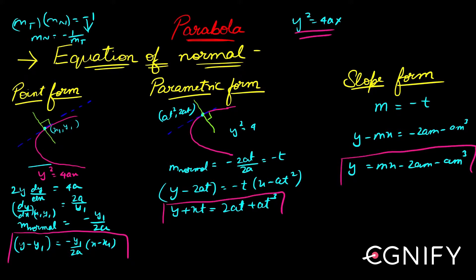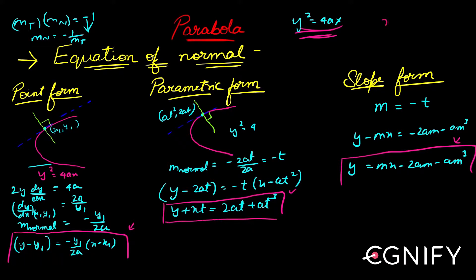The methods used are valid for all types of parabolas, but these three results are valid only for y² = 4ax. If you want to find the parametric form for x² = 4ay, you'd use the same method to derive it for that parabola. So let's look at the point form first, and understand what a normal is.